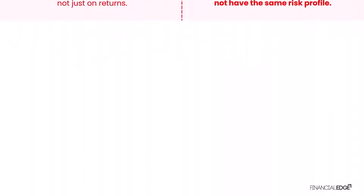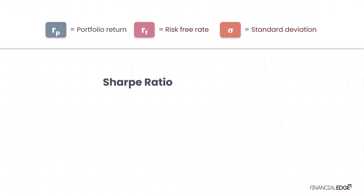Here is your Sharpe Ratio formula. It's the excess returns — calculated by the return on the portfolio minus the risk-free rate — divided by the standard deviation of returns.